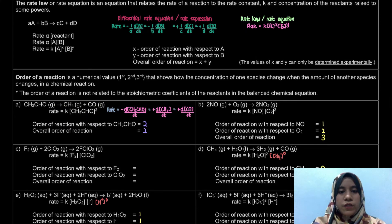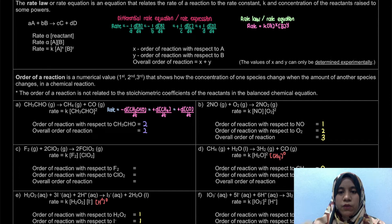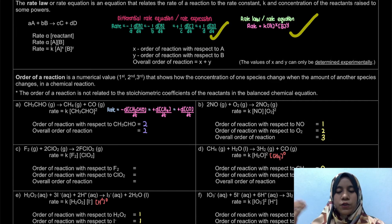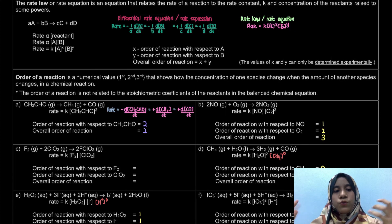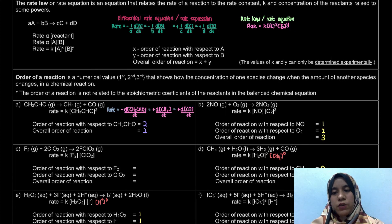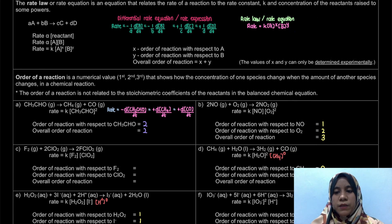Remember: the order of reaction is not related to the stoichiometric coefficient. We look based upon our rate law. Also remember that the differential rate equation, or rate expression, is different from the rate law or rate equation. Please note this down and keep it in your notes. This video was just to introduce you to how to write the rate law and what is the order of reaction — which can only be determined experimentally.